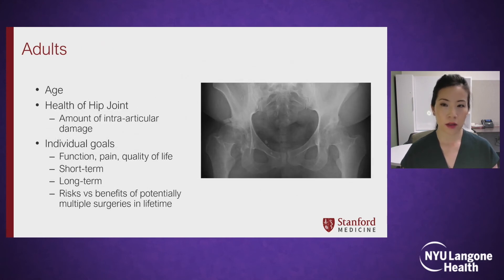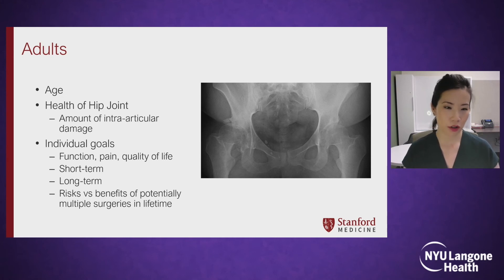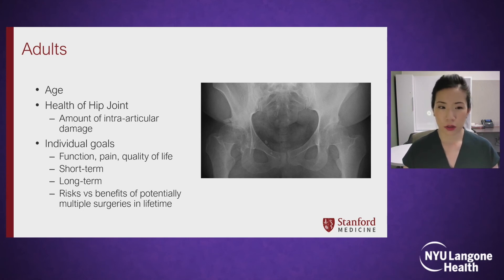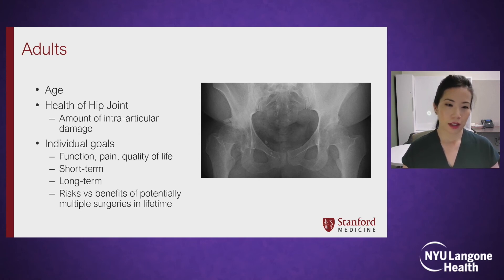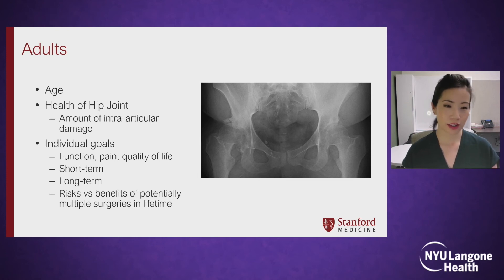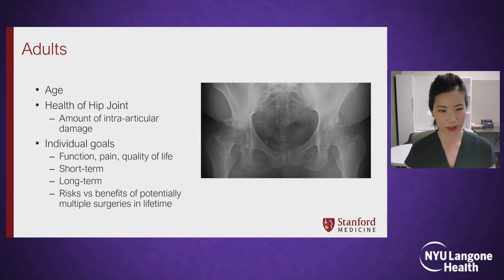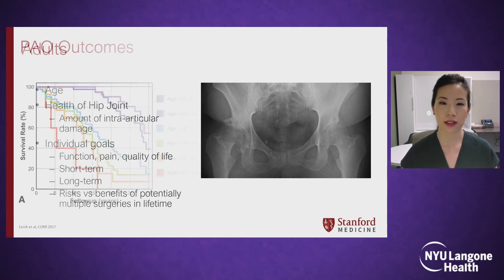In adults, you consider their age, the health of the hip joint, the amount of intra-articular damage, and you also have to discuss in detail their individual goals. For a 35- or 40-year-old who desires to keep up with her young children and be very active, you discuss their function, pain, and quality of life goals — both short-term and long-term. Some people prefer to just wait and have a hip replacement at some point, so it's an individualized approach to counseling these patients.